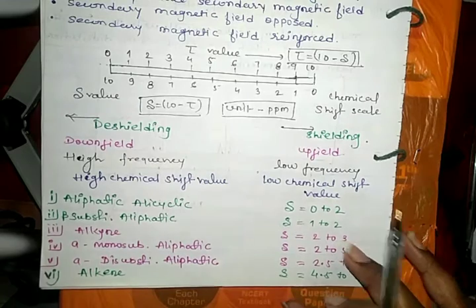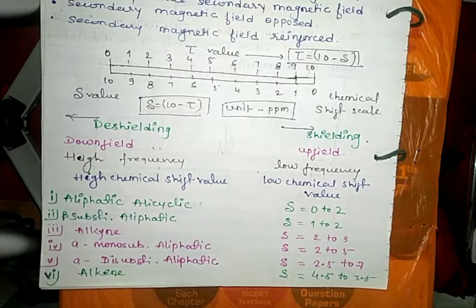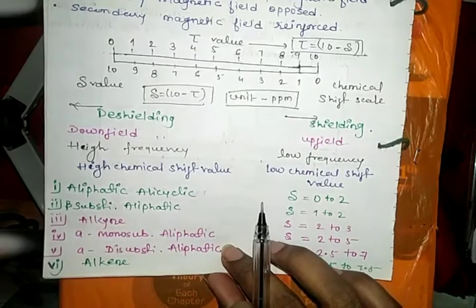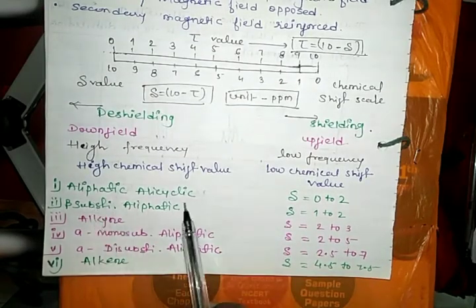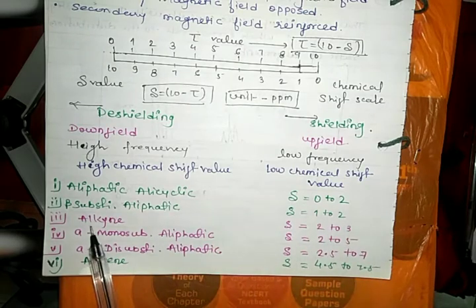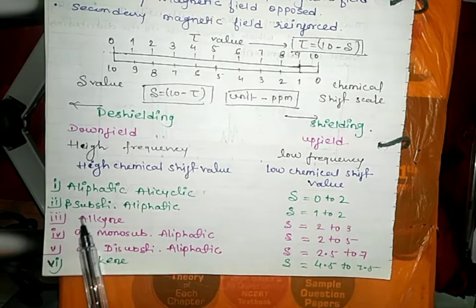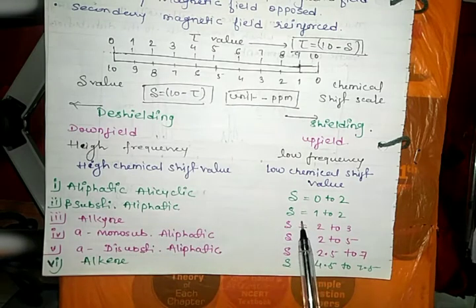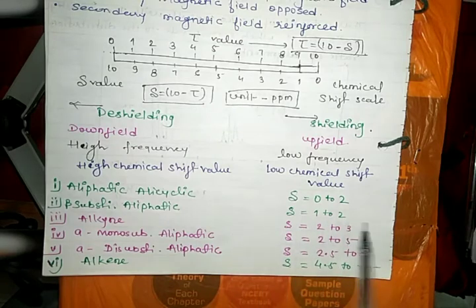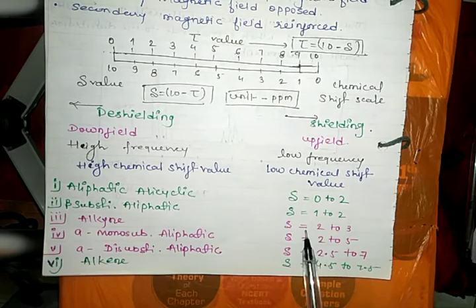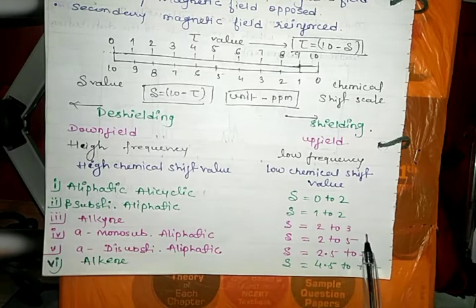After that we see different chemical shift values of different types of compounds. For aliphatic or alicyclic we get delta value 0 to 2 parts per million. For beta-substituted aliphatic compound we get value between 1 to 2 parts per million. For alkyne we get 2 to 3 parts per million chemical shift value.